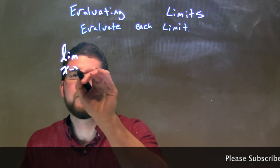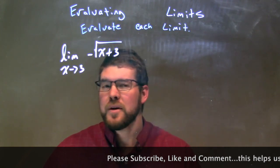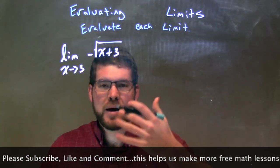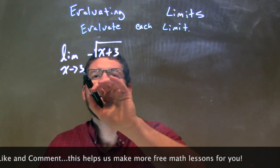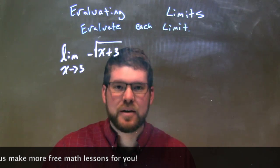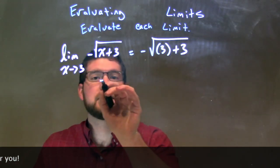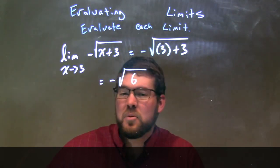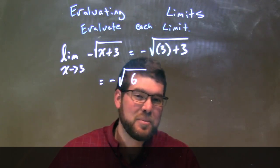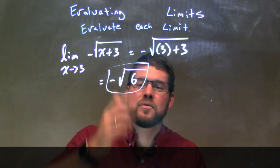The limit as x approaches 3 of negative square root of x plus 3. Since this is a root function, one of our rules says we can plug in directly wherever it exists in the domain. Since 3 plus 3 is 6, we're not taking the square root of any negative, so we can plug 3 in for x. That gives us negative square root of 3 plus 3, which is negative square root of 6. This can't be simplified further since 6 is 2 times 3, so our final answer is negative square root of 6.